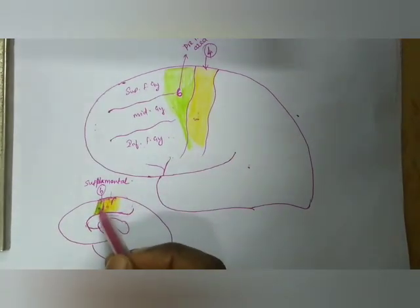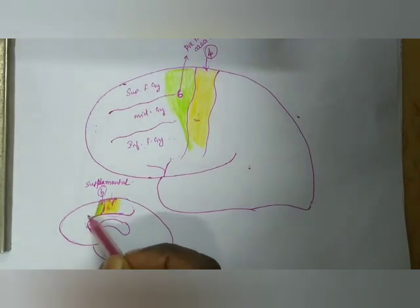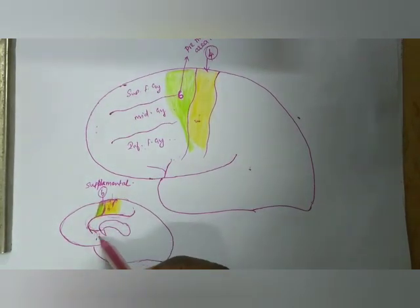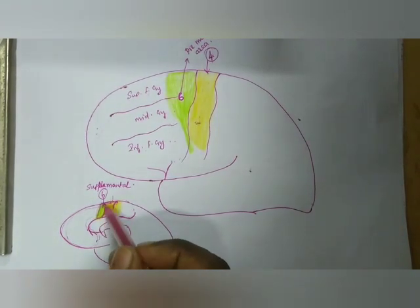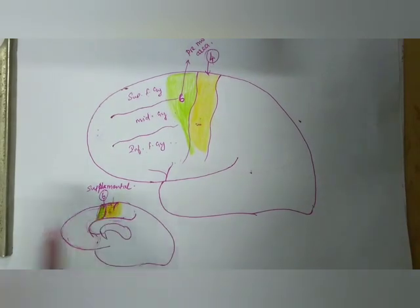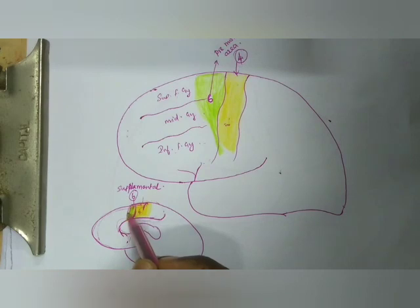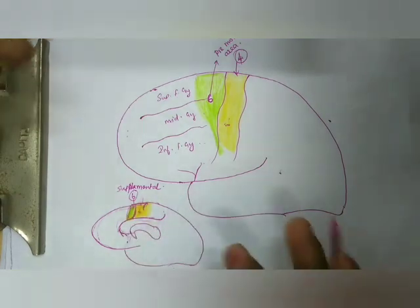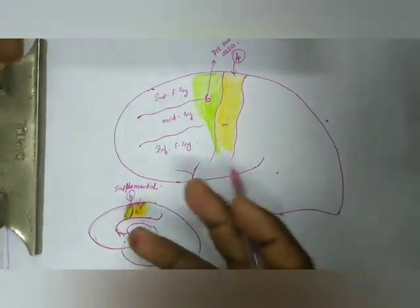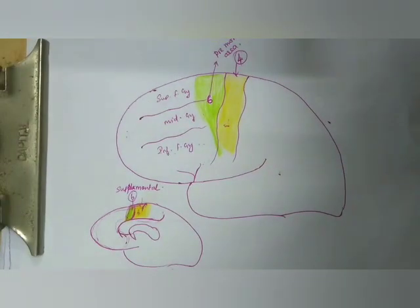The supplemental motor area is located in the medial frontal gyrus. This supplemental motor cortex is responsible for complex movements, including turning of the head to the opposite side and control of posture.